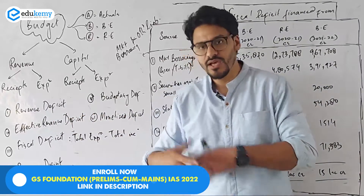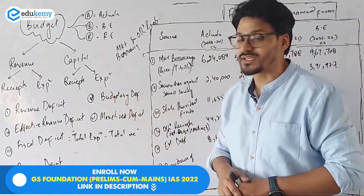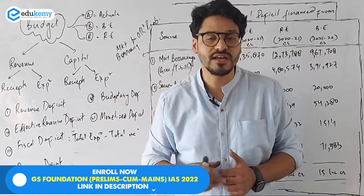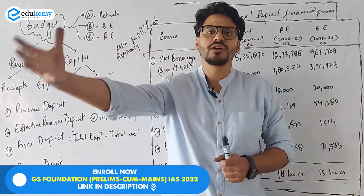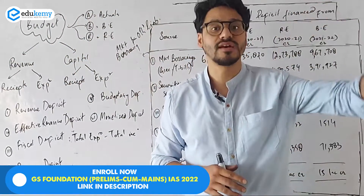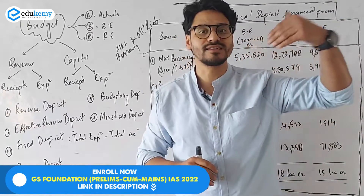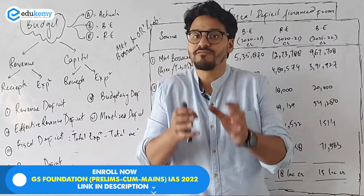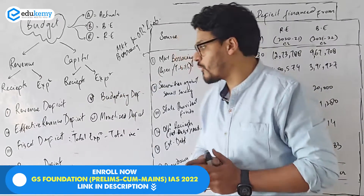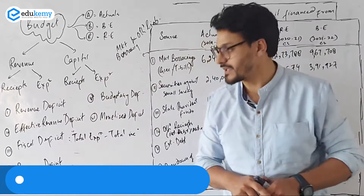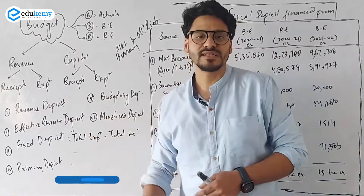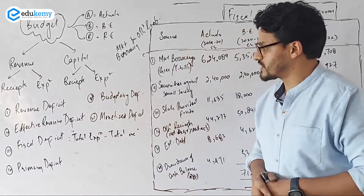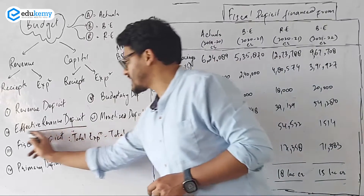Then we have effective revenue deficit — that is more or less a new concept. Then you have fiscal deficit. Fiscal deficit means what is the total income of the government and what is the expenditure of the government. If the government's expenditure is more and the government's income is less, that means the government will have to borrow money. Apart from these, there are deficits like primary deficit, monetized deficit, and budgetary deficit — we'll look into those in the foundation class.